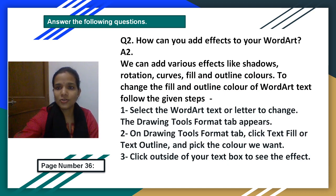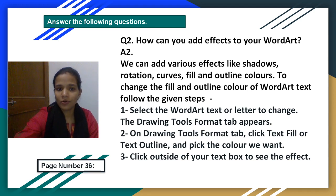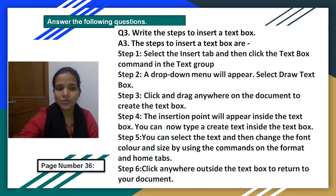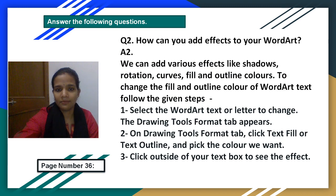Question number 2: How can you add effects to your Word Art? We can add various effects like shadows, rotation, curves, fill and outline colors. To change the fill and outline color of Word Art text, follow these steps. Step 1: Select the Word Art text or letter — the Drawing Tools Format tab appears. Step 2: On the Drawing Tools Format tab, click Text Fill or Text Outline and click the color you want. Step 3: Click outside your text to see the effect.